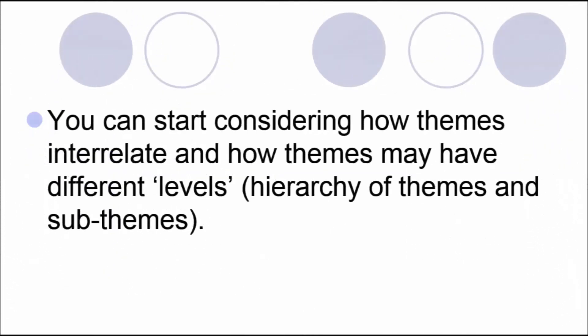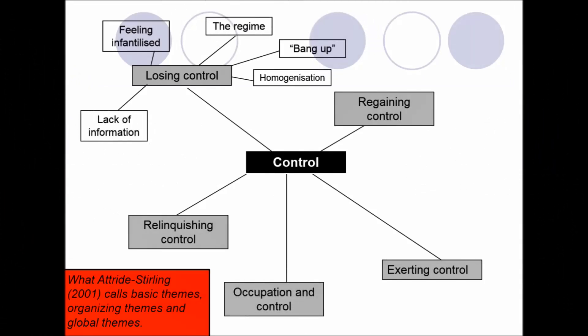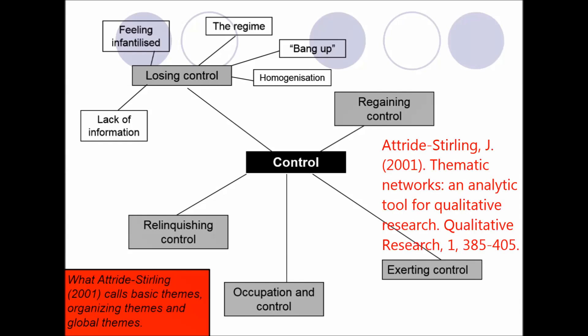So if you can imagine the process of grouping together codes to create broader thematic categories, you can then start to consider how those themes themselves may interrelate and how themes may have different levels or hierarchies. So another way to think about themes and how they interlink and perhaps create hierarchies and orders of thematic categories is to look at what Jennifer Attride-Stirling calls thematic networks.